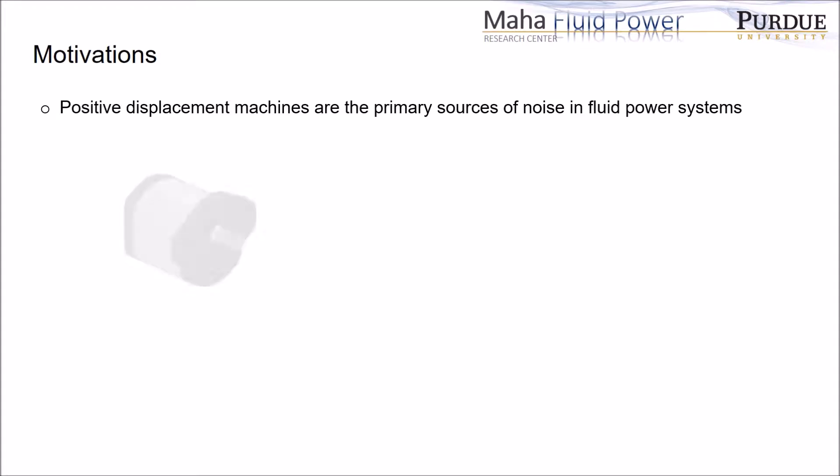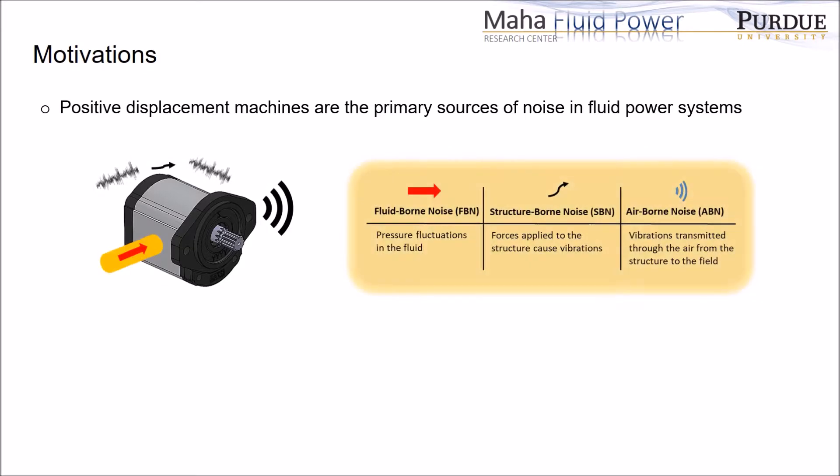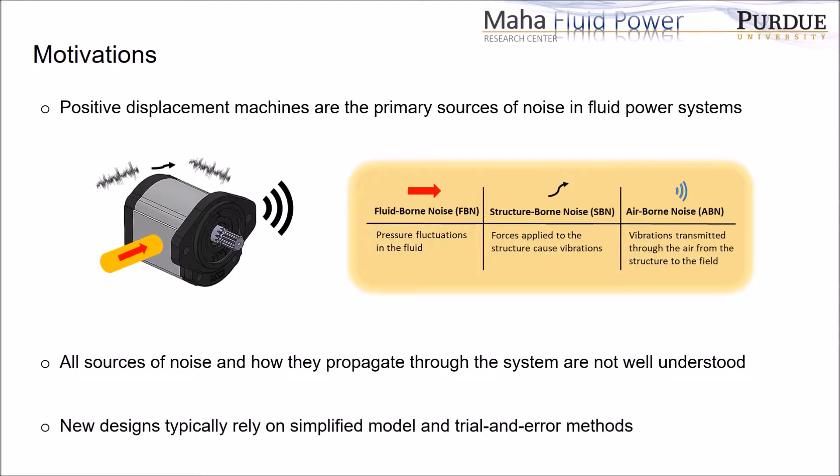To enhance noise performance, our research team has focused on external gear pumps, and the noise generation in gear pumps can be categorized into three types: fluid-borne noise, structure-borne noise, and air-borne noise. Due to the complex interaction between these three domains, all the noise sources and how they propagate are not well understood, and new designs rely on simple methods.